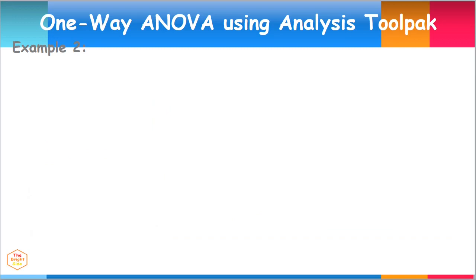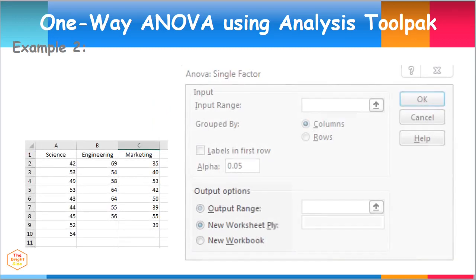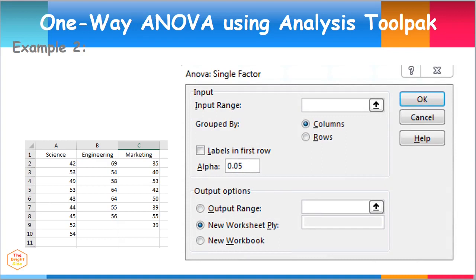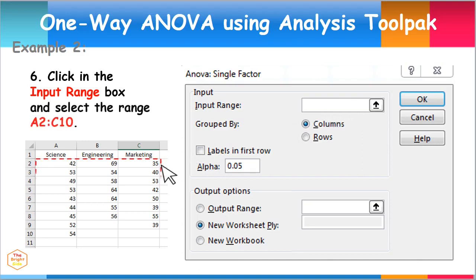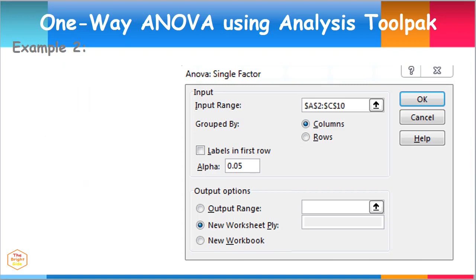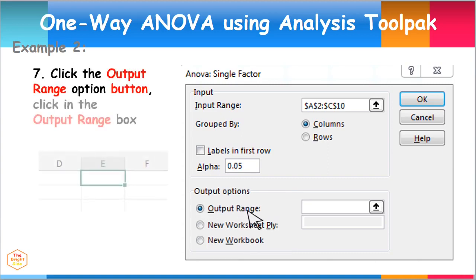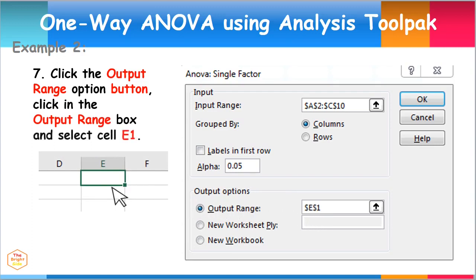Let's input the data for salaries of people with various degrees. To do this, click in the Input Range box and select the range of cells from A2 to C10. Next, click the Output Range option button, then click in the Output Range box and select cell E1. This provides the location placement of the resulting output. Click OK.